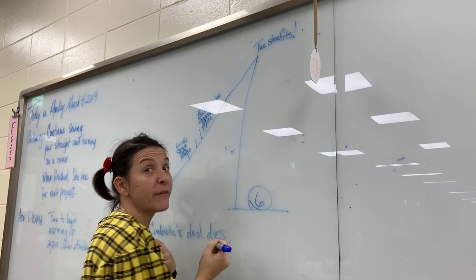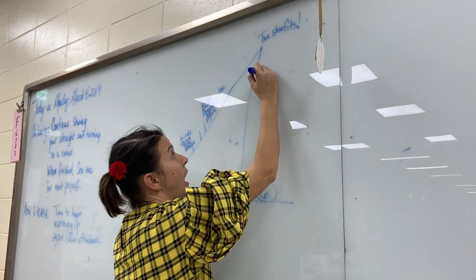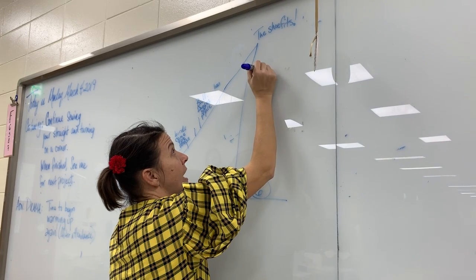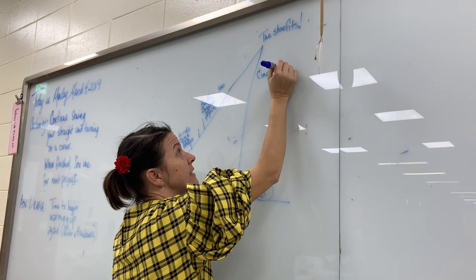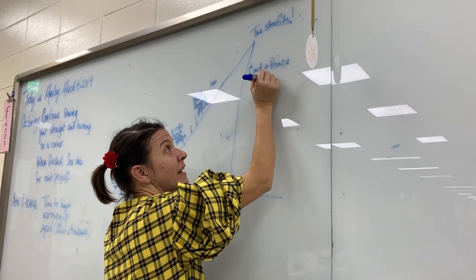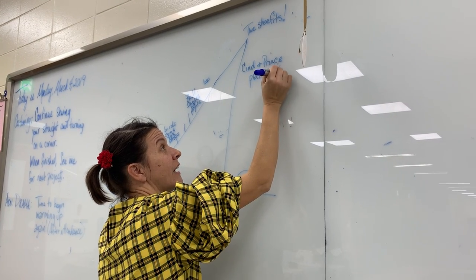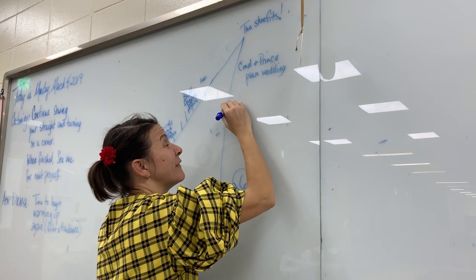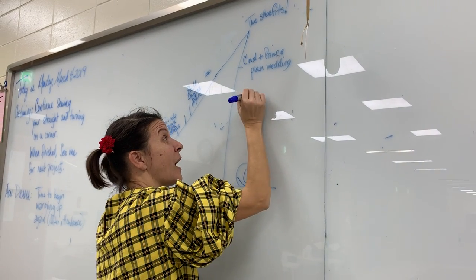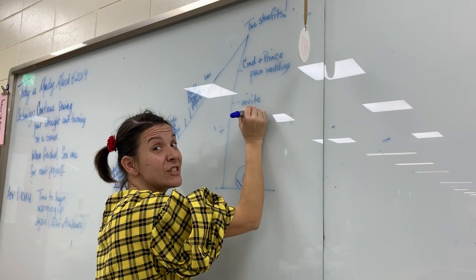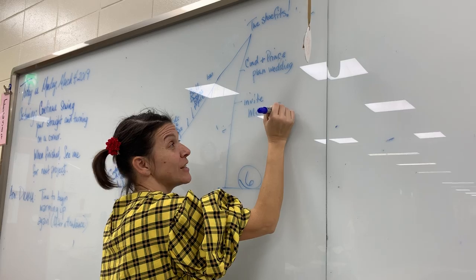And then we have our falling action. Cinder and prince plan wedding, invite mom and sisters, because Cinderella's nice that way.